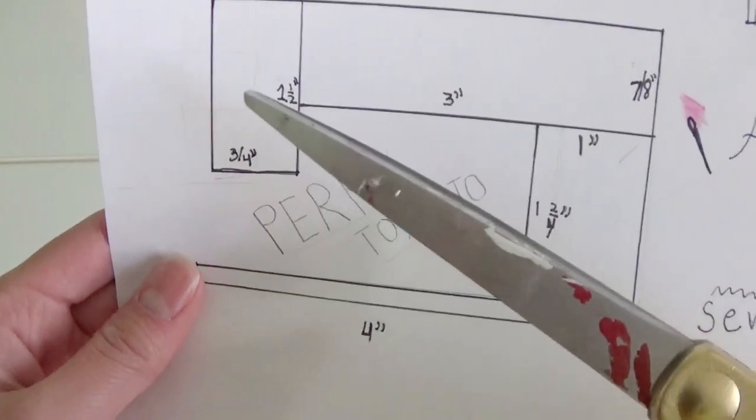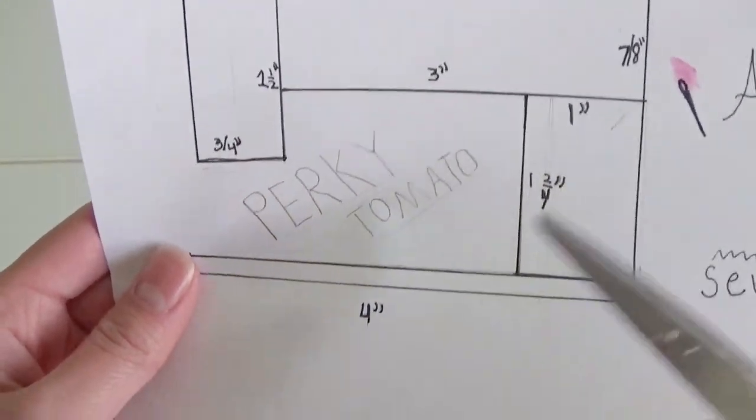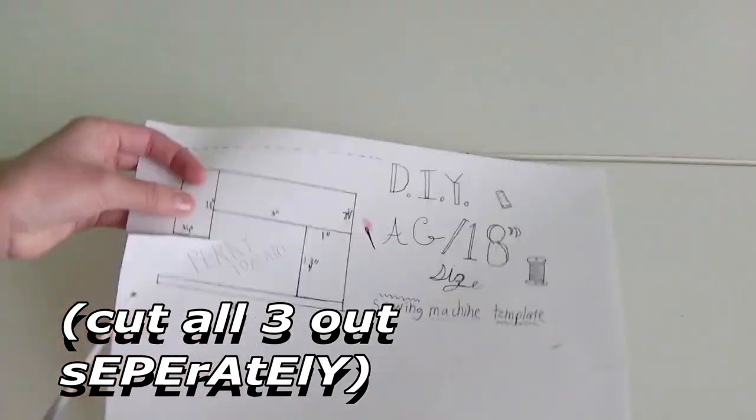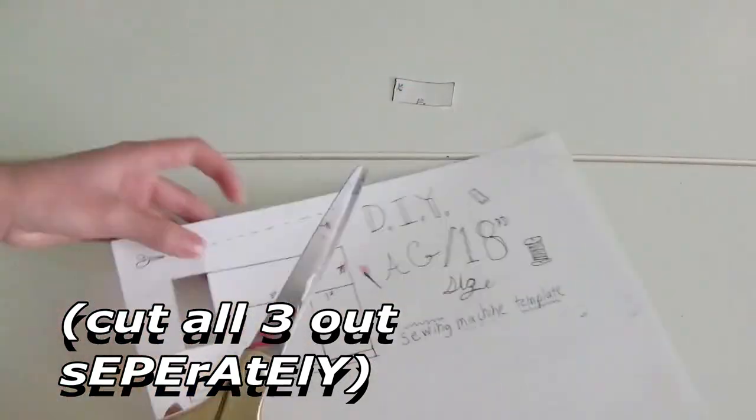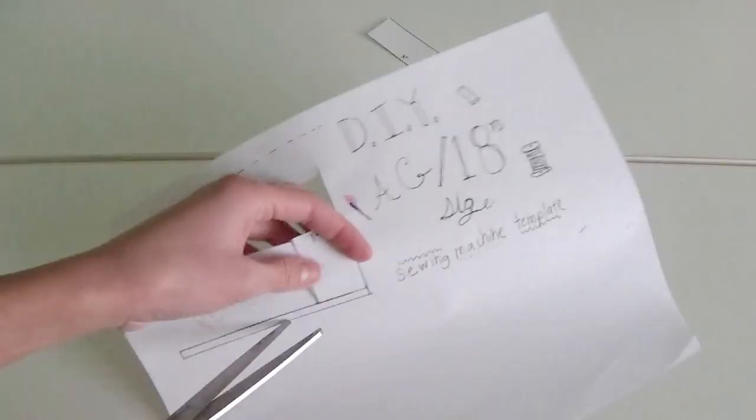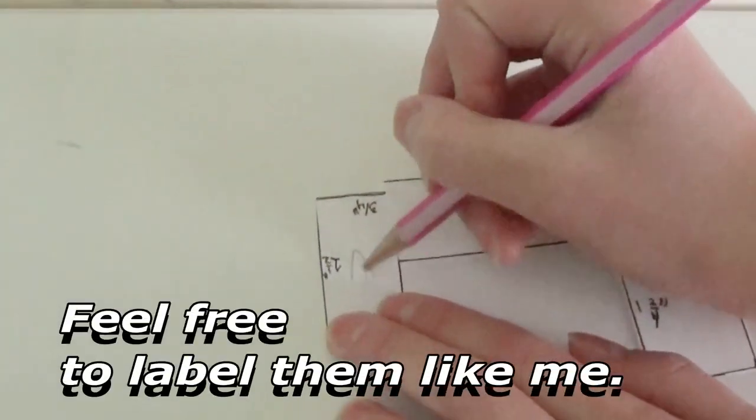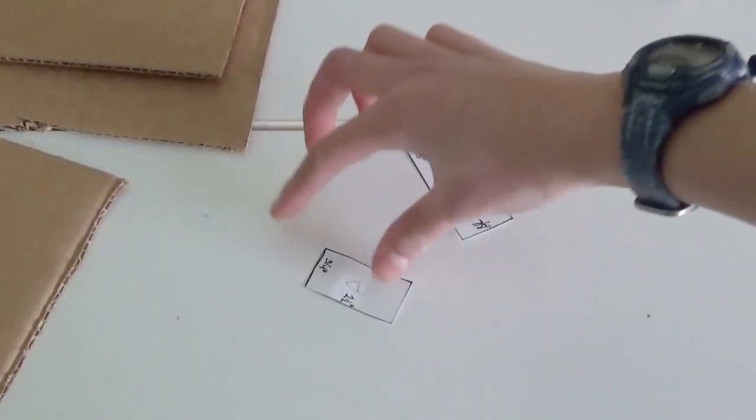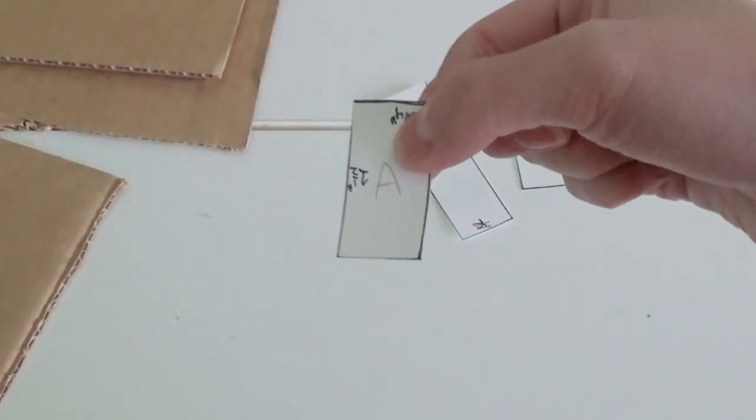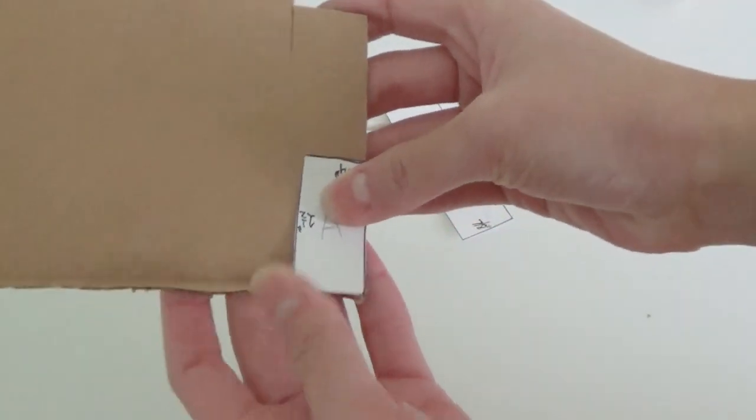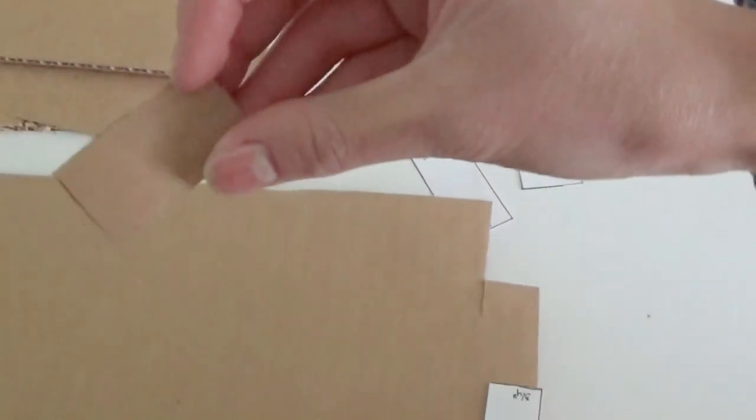So firstly, I'm going to just cut out these three little boxes. Don't worry about this one, you only need to worry about these three. So with my cardboard and one of these little boxes from our template, I lay it on my cardboard like this and then I'm going to cut around it and then I get a piece like this.